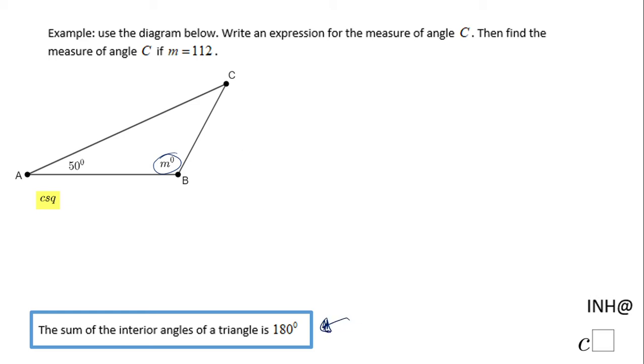says the sum of the interior angles of a triangle is 180 degrees. So basically, the measure of angle A plus the measure of angle B plus the measure of angle C equals 180 degrees. That's the starting point.